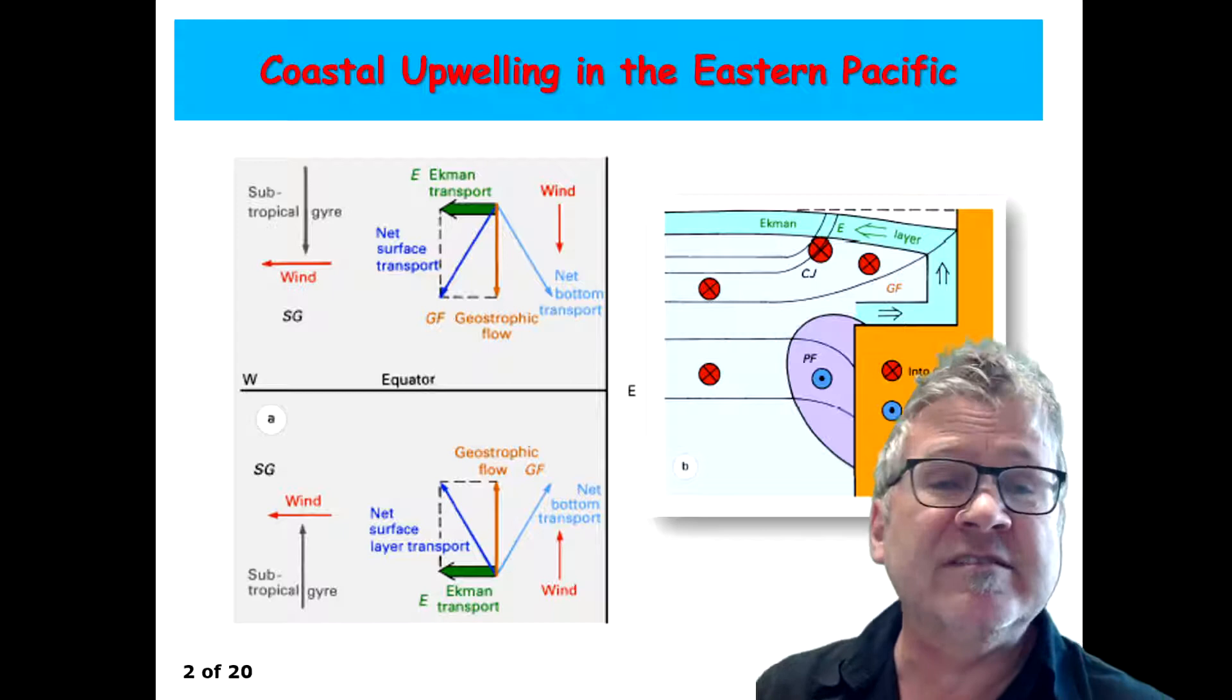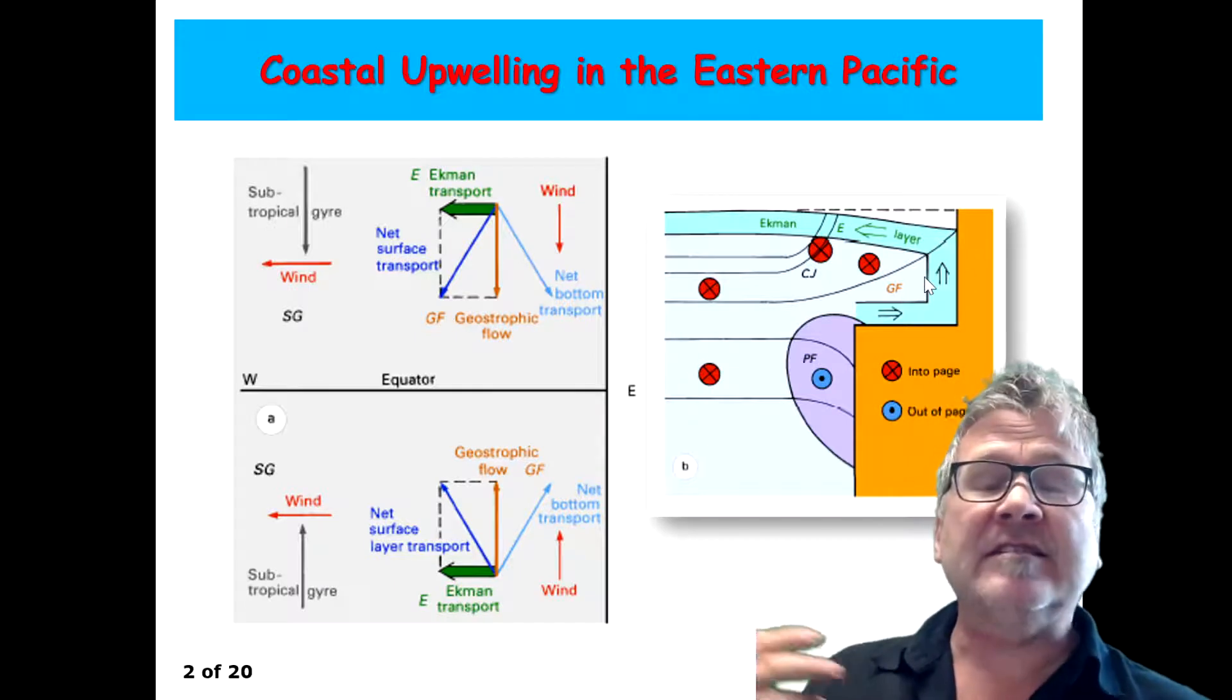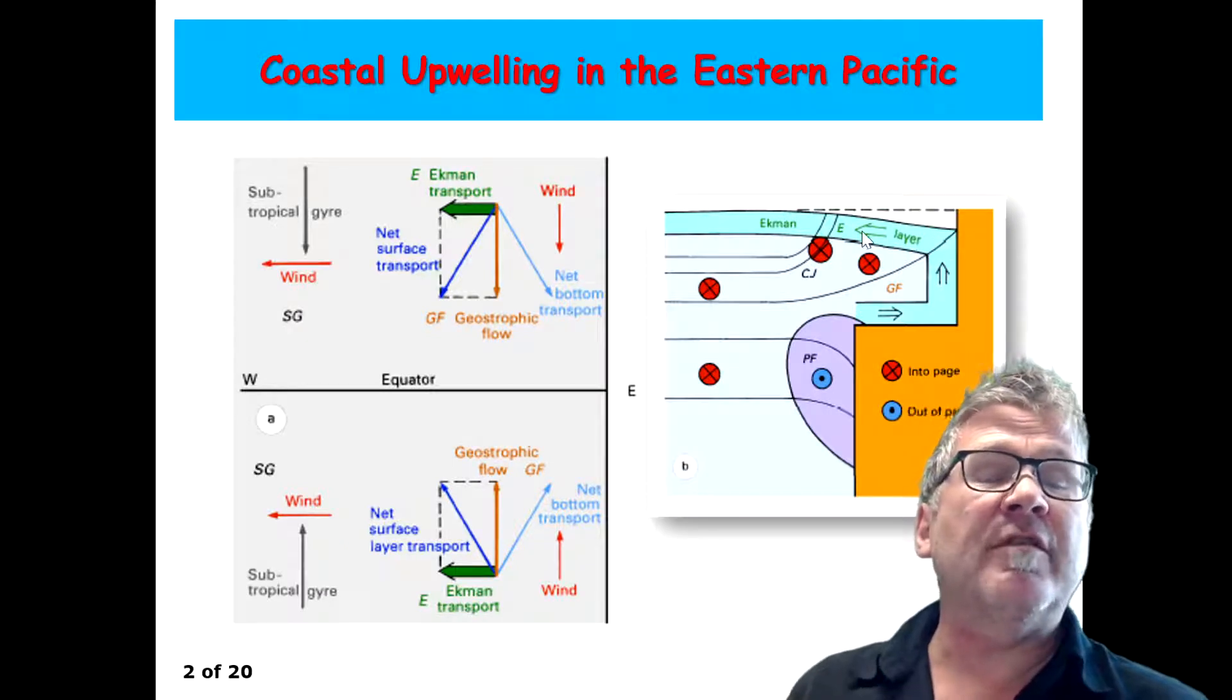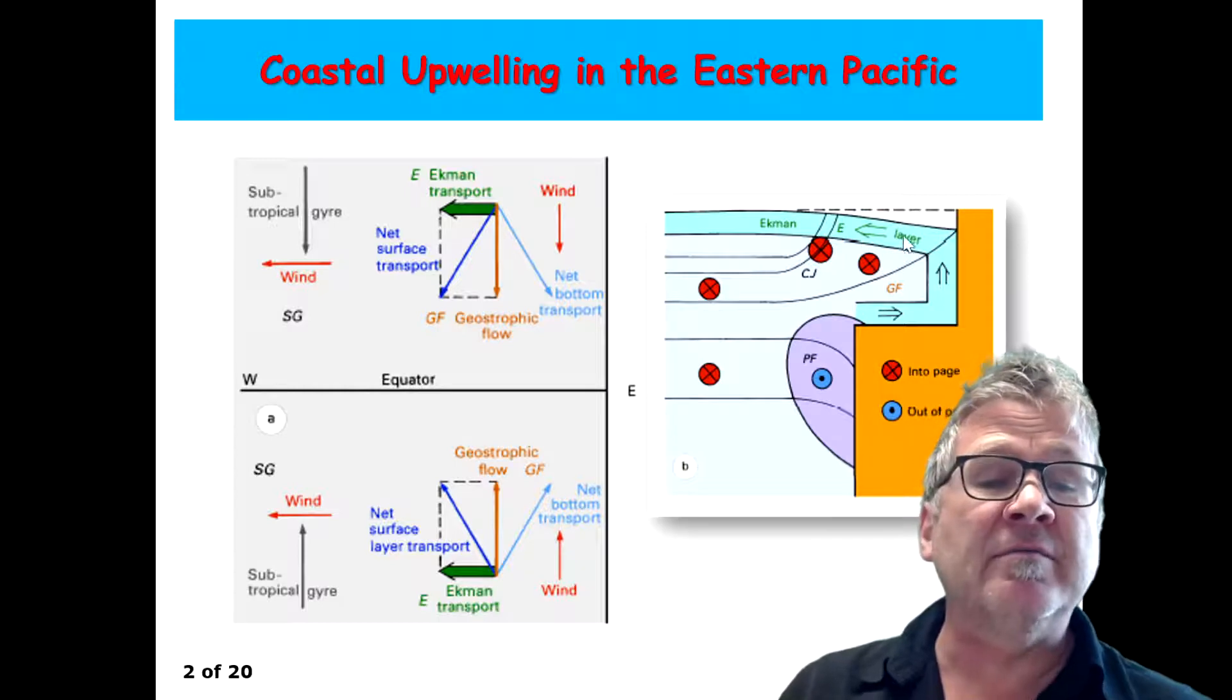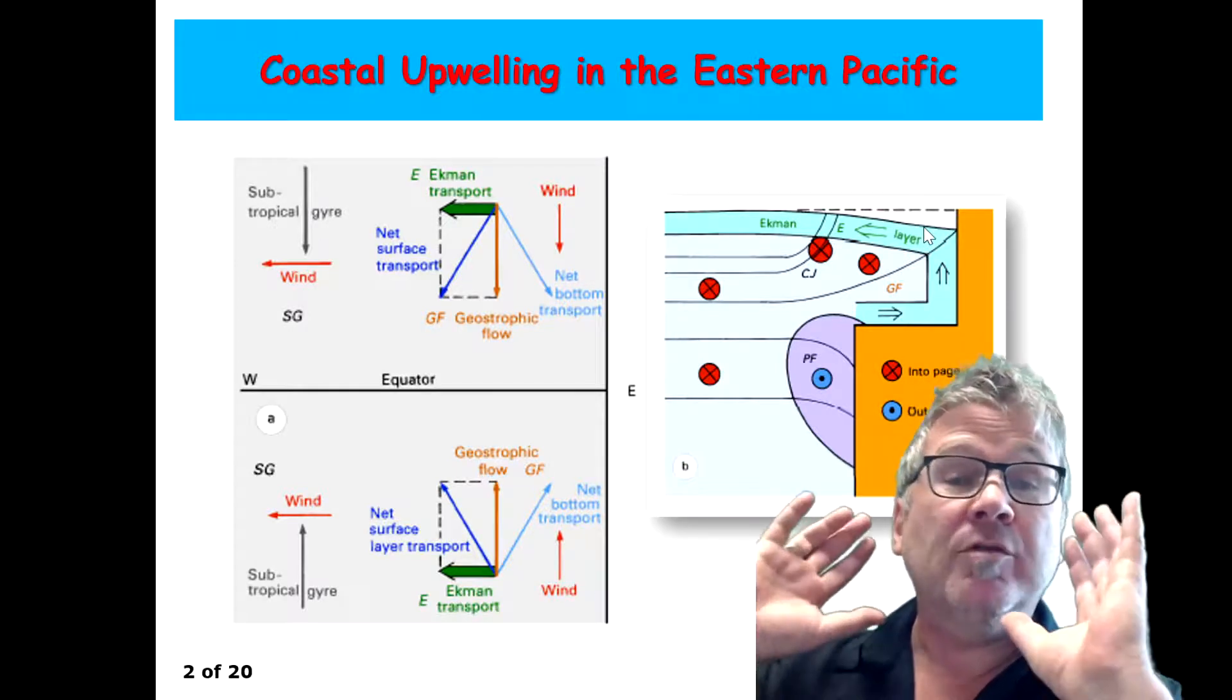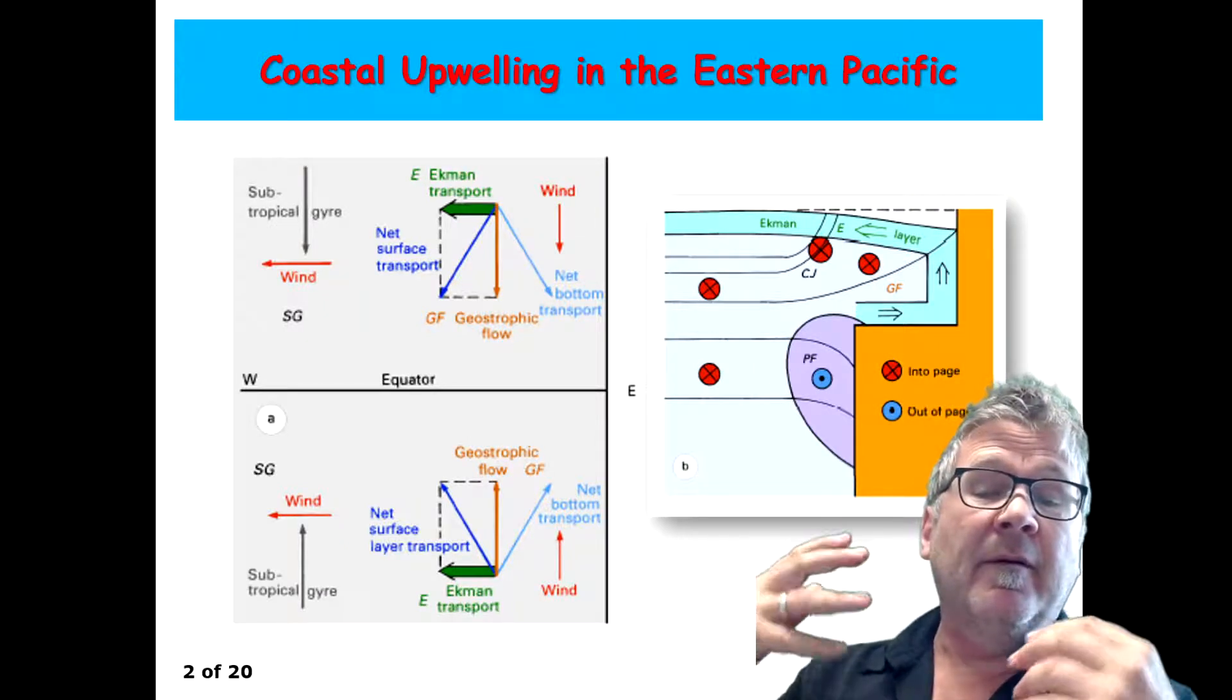And in these regions, it's deep enough that the surface and bottom Ekman layers are actually a separate feature. So what you get is that the wind creates the offshore Ekman transport near the surface, and the geostrophic flow that results from this mechanism creates a bottom Ekman layer and an onshore. Both north and south of the equator.